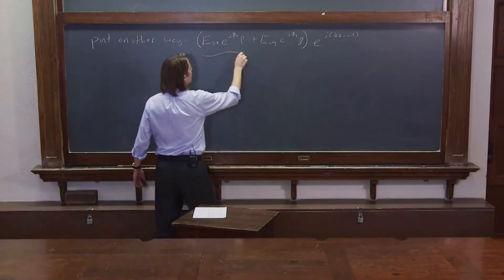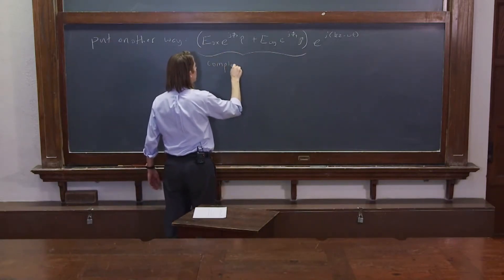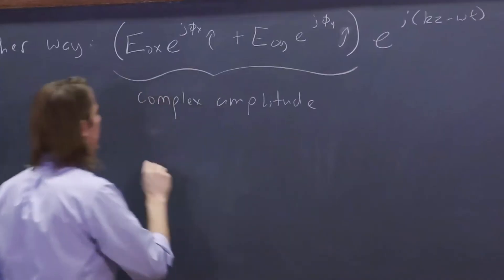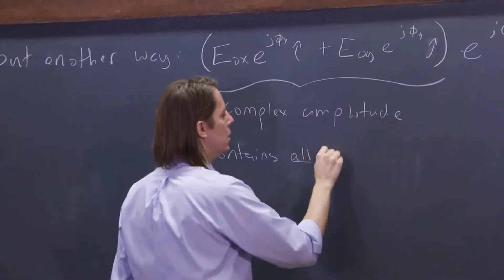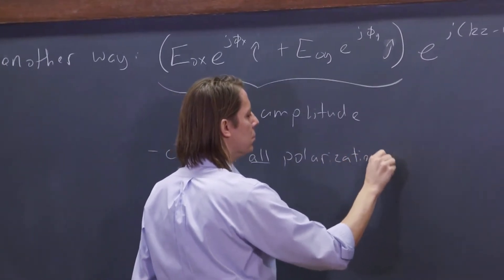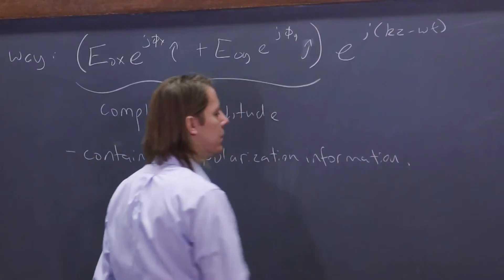This thing that we're left with is called the complex amplitude. All right, it contains all polarization information.